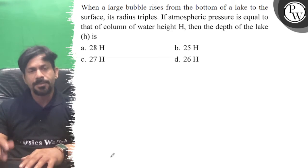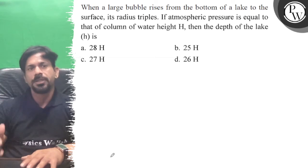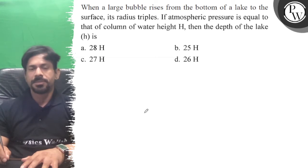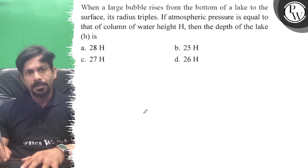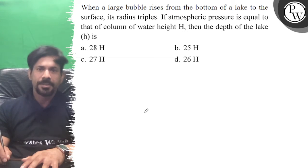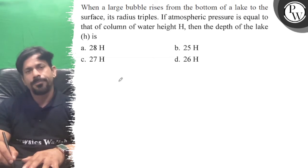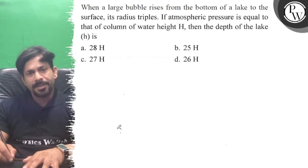Hello, let's see the question. When a large bubble rises from the bottom of a lake to the surface, its radius triples. If atmospheric pressure is equal to that of a column of water height H, then the depth of the lake is...